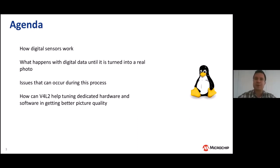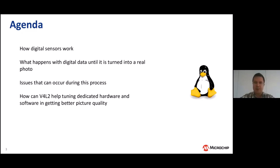Then I will present what can happen during this process — what issues can occur, what challenges we face to obtain better photo quality — and how we can cope with these situations, how we can alter the pipeline functionality, and how the V4L2 subsystem can help us find the cause of issues and alter the hardware and software pipeline to get better picture quality.